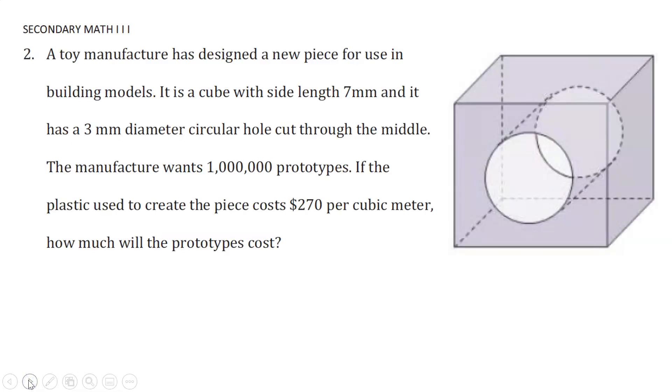In this problem we are given a figure that is a piece for a toy. The toy company needs one million of these pieces. We know the shape and dimensions of the figure and we know how much the material to make the pieces costs in price per cubic meter. We need to find how much it will cost to produce one million of these pieces.